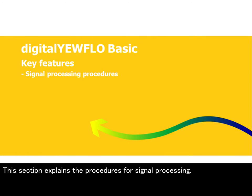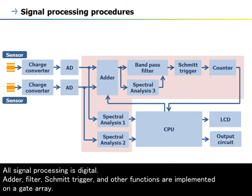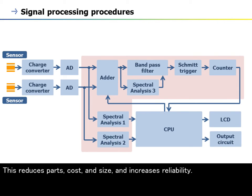This section explains the procedures for signal processing. Here is a block diagram of the Digital EarFlow. All signal processing is digital. An IIR filter, Schmidt trigger, and other functions are implemented on a gate array. This reduces parts, cost, and size, and increases reliability.